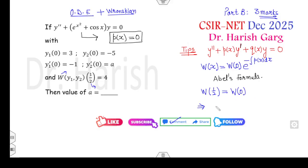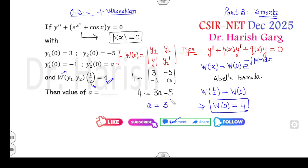So, which implies Wronskian at the point 0 is my 4. Because 4 is given as Wronskian at half. Now, how you can find Wronskian at the point 0? You can find the Wronskian at the point 0 is the determinant of y1, y2, y1 dash, y2 dash. I can substitute left hand side is 4. This number is 3 minus 5 minus 1 a. That gives you 4 is equal to 3a minus 5. So, that implies a will be my 3.